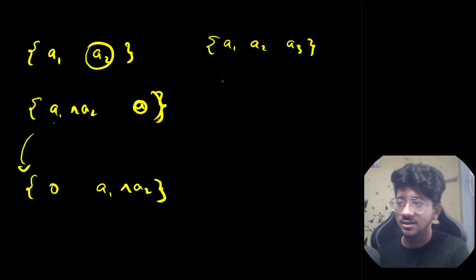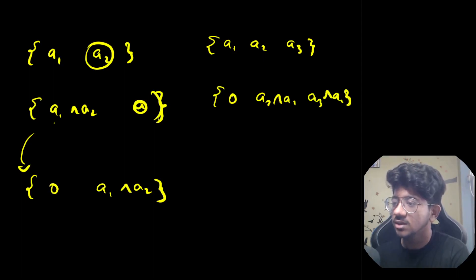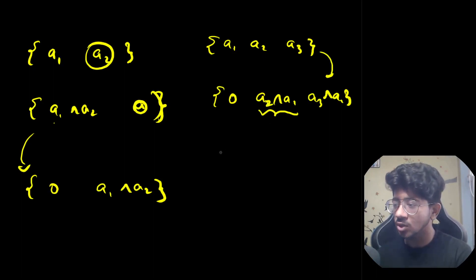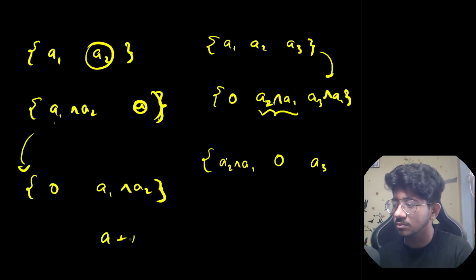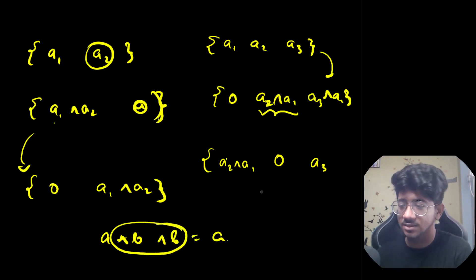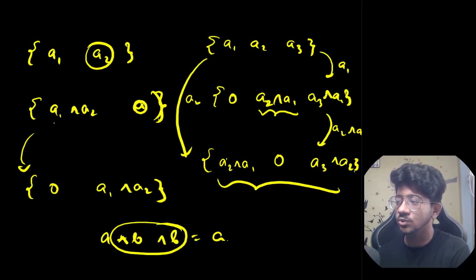Let's take three elements A1, A2, A3. If we pick A1 and XOR everything, we get {0, A2 XOR A1, A3 XOR A1}. Now let's pick A2 XOR A1 and XOR the whole array again. We get {A2 XOR A1, 0, A3 XOR A1 XOR A2 XOR A1}. Since A1 gets XOR'd twice, using the property that A XOR B XOR B = A, this simplifies to {A2 XOR A1, 0, A3 XOR A2} — which is the same as if we had just done a single XOR with A2 from the start.